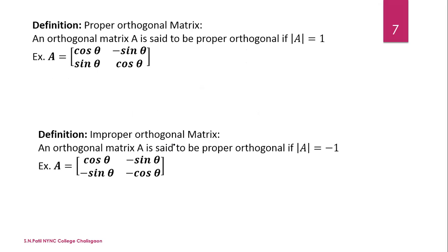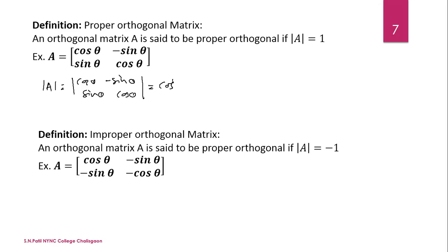Let us take some definitions. A proper orthogonal matrix: an orthogonal matrix A is said to be proper orthogonal if the determinant of A equals 1. For example, take A equal to the matrix with entries cos theta, minus sin theta in the first row and sin theta, cos theta in the second row. Its determinant is cos squared theta minus (minus sin squared theta), which equals cos squared plus sin squared theta, equal to 1. Hence A is a proper orthogonal matrix.